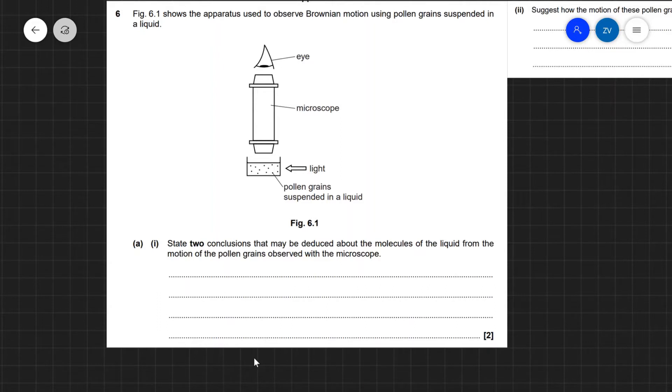Figure 6.1 shows the apparatus used to observe Brownian motion using pollen grain suspended in a liquid. Normally this experiment is done with smoke particles in a smoke cell, however in this case we're going to have the same physics, applied onto pollen grains which have been suspended in a liquid.